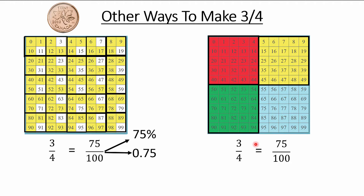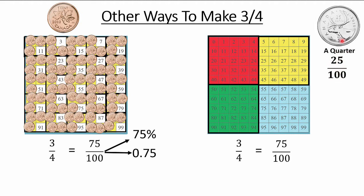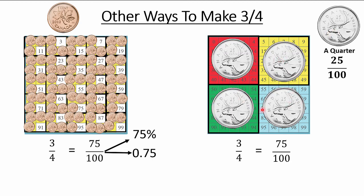Remember the penny? A hundred of them makes a dollar. If we covered all 75 yellow ones, that's 75 out of a hundred — 75 cents. But we can show 75 cents a different way: instead of all those pennies, bring in the quarter. You know why they call it a quarter? Because it's 25 out of a hundred and four of them make a dollar — each one is a quarter. I need only three of them: 75 cents again. This lesson isn't about money, but it's a meaningful example.